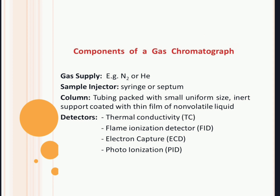The components of the gas chromatograph include the gas supply — carrier gas such as nitrogen and helium. For sample injection, a syringe or septum is used. The columns are packed columns or capillary columns. The detectors mainly used in gas chromatography are: thermal conductivity detector (TCD), flame ionization detector (FID), electron capture detector (ECD), and photo ionization detector.